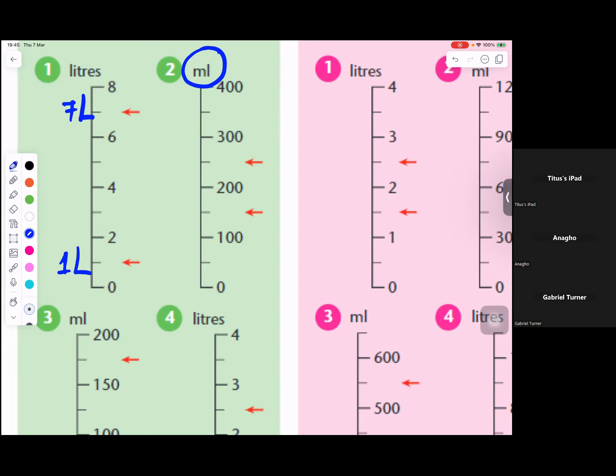What number is in the middle of 100 and 200? 150, correct. So 150 milliliters. And the next one would be...